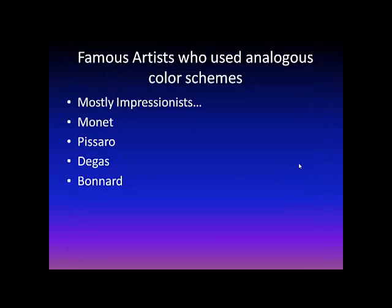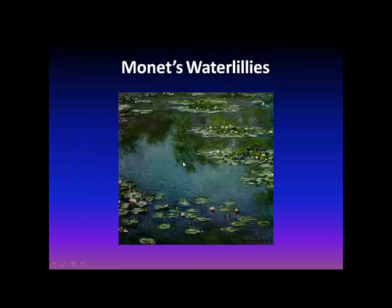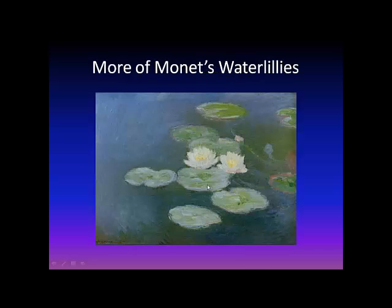Famous artists who used analogous color schemes were mostly Impressionists: Monet, Camille Pissarro, Edgar Degas, and Pierre Bonnard. Monet had a thing about water lilies, so you can see he's got a nice analogous color scheme going on here with blue, green, and violet. And then he has another one that has blue and green and little bits of violet here and there.